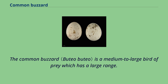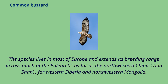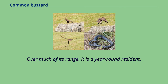The common buzzard is a medium to large bird of prey with a large range. A member of the genus Buteo, it is a member of the family Accipitridae. The species lives in most of Europe and extends its breeding range across much of the Palearctic as far as northwestern China, far western Siberia and northwestern Mongolia. Over much of its range, it is a year-round resident.